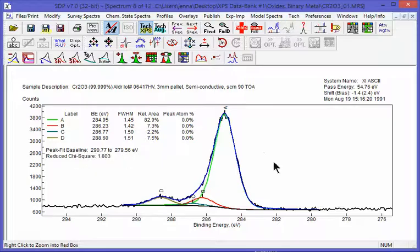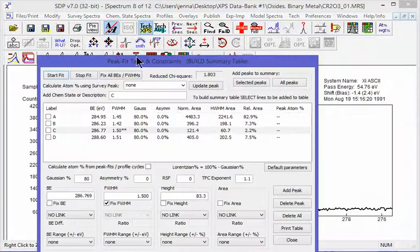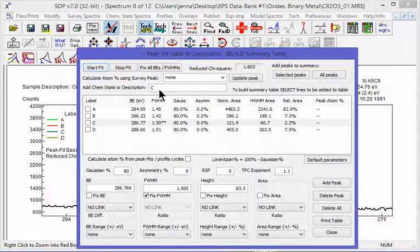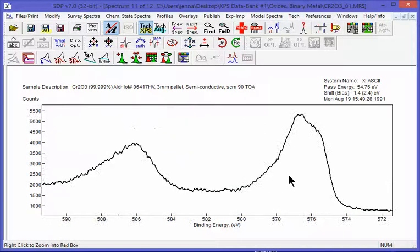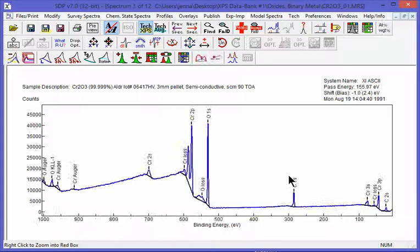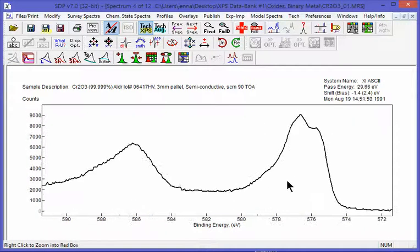You can hide these numbers if you want. You can label these if you want by going into this table, change those numbers, change the labels from A to whatever. Let's go over here. This is a chrome oxide, the chromium 2P peak.